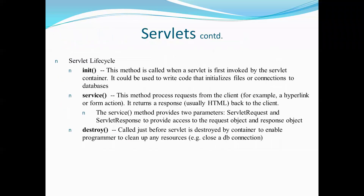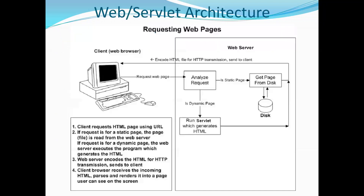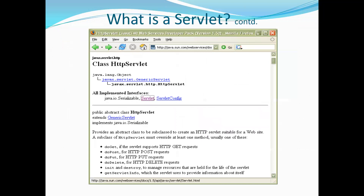The main theme behind web application development is the request and response process. A user or client sends a request, the server processes it according to the requirement, and you get the required output in the form of a response. The request and response could be for anything — for example, inserting data into a database, getting a record from the database, or downloading something available on the server.